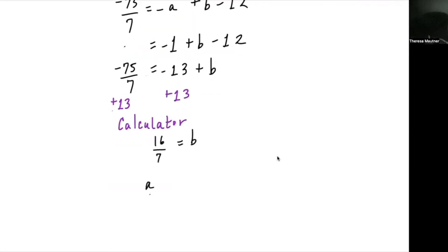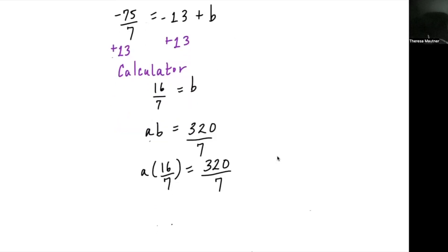b is 14/7. Set a times 14/7 equal to 32/7. Solve by dividing by 14/7. Use parentheses if you're dividing in your calculator, or multiply by the reciprocal 7/14 to get your answer a equals 20.